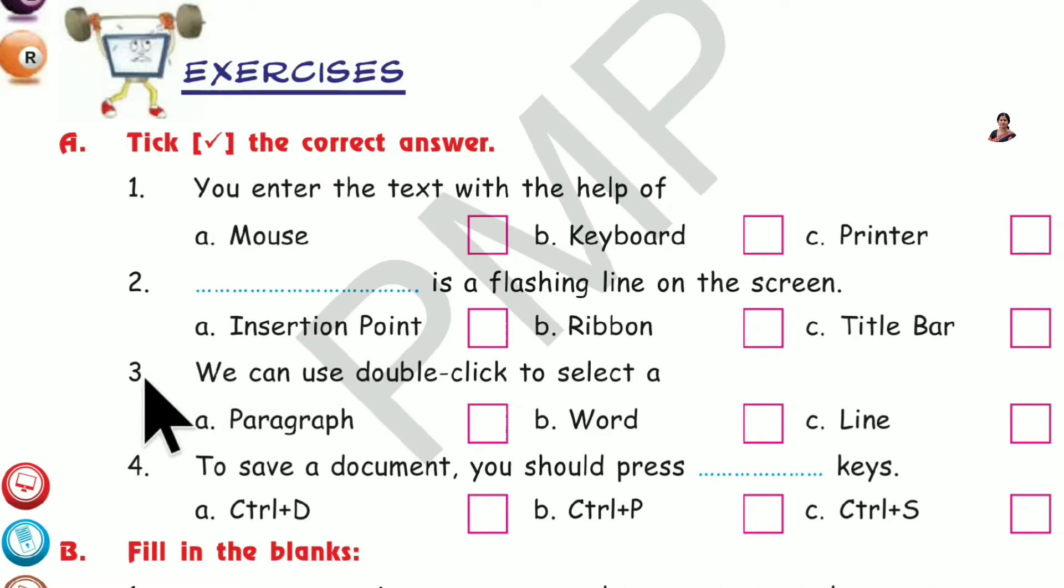Number 3. We can use double-click to select a what? Option B. Word. Tick here.